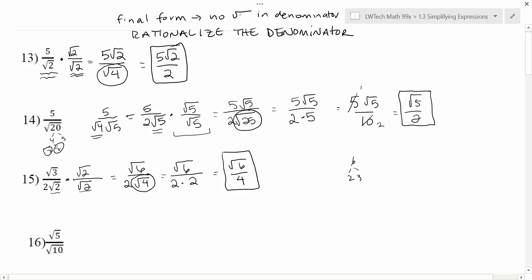Let's try the last example. Notice I've got a square root of 10 in the denominator, and that's a problem. To cleverly get rid of it, I'm going to multiply by the version of 1 that gives me the extra pairs I need — so root 10 over root 10. On the top, square root of 5 times square root of 10 is square root of 50, since they're both inside. On the bottom, square root of 10 times square root of 10 is square root of 100, which by design gives us the perfect square we need — and its square root is plain old 10.